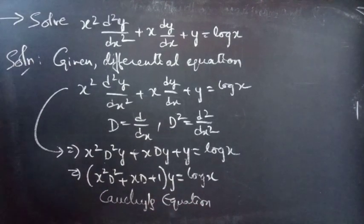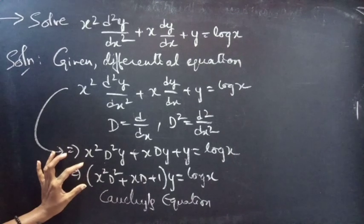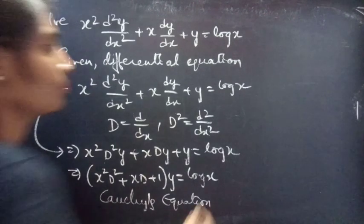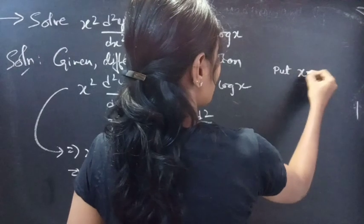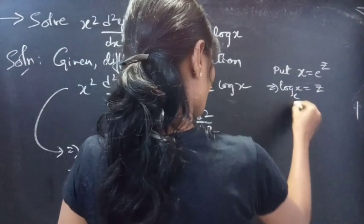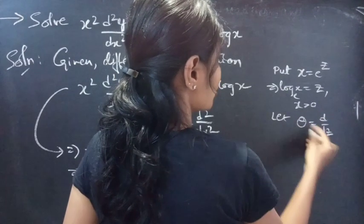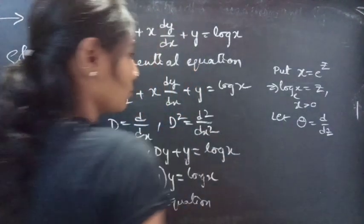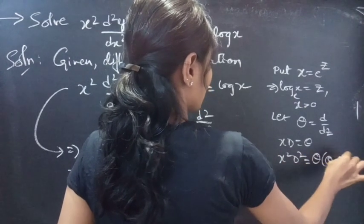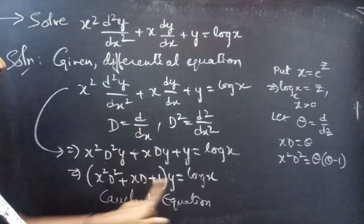It has variable coefficients. So now we will reduce this to a higher order linear differential equation with constant coefficients, simply by making a substitution. Put x = e^z, then log x = z for x > 0. Let θ = d/dz, where θ is a differential operator with independent variable z. Then x D = θ, and x² D² = θ(θ − 1).